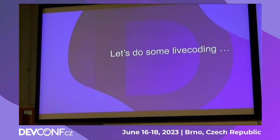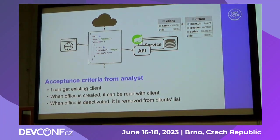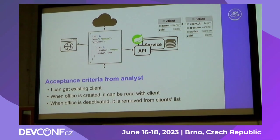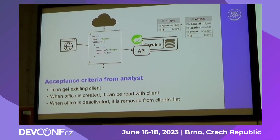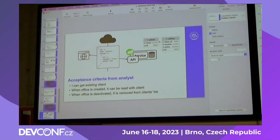Let's do some live coding, because I have spoken too much. I would like to prove that it works. I will have a really small application which, because we don't have much time, has also some logic already implemented. There is a small database with a client which has offices. And my task is to meet some acceptance criteria: I need an endpoint for getting the client, and when an office is created it should be read with the client as you see in the JSON, and when an office is deactivated it's removed from the client's list.